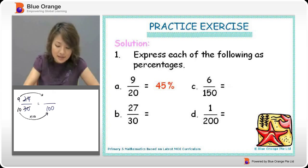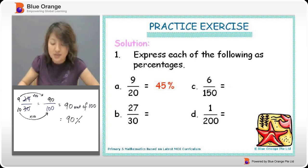And 9 times 10, that gives us 90. This means 90 out of 100, which is 90 over 100. That's 90%.